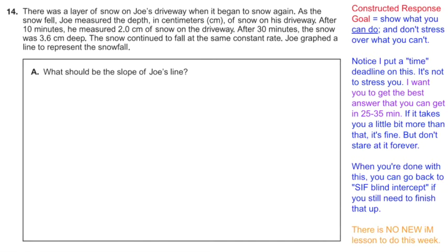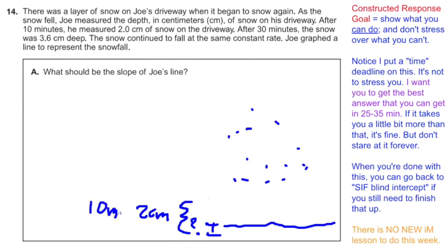There was a layer of snow in Joe's driveway when it began to snow again. I'm going to draw a little picture of this situation. We got a layer of snow. I don't know how tall that layer is. And it's snowing again. After 10 minutes, he measures 2 centimeters of snow. After 30 minutes, he measures 3.6 centimeters of snow. Now you notice I put those little commas there. Those are some ordered pairs.